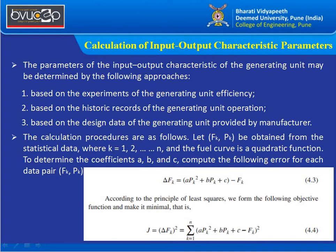The parameters a, b, c can be obtained from: experiments on generating unit efficiency; historical operational data (most commonly used); or design data provided by the manufacturer, which may change with operational conditions. Let fk and pk be obtained from statistical data, where k ranges from 1 to n depending on the power output samples, and the fuel curve is fitted as a quadratic function.